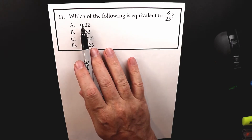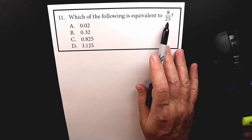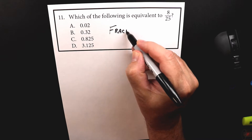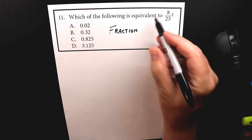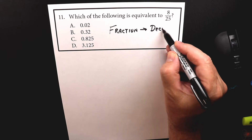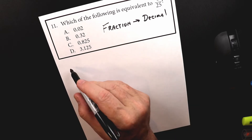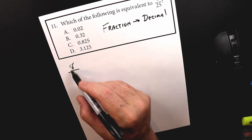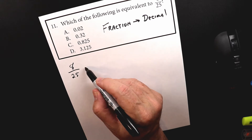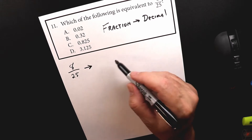This is number 11: which of the following is equivalent to 8 over 25? Here we're going to convert a fraction to a decimal. We have 8 over 25 — you've done this a couple of times for some of the previous problems — so we have to remember how to set up the division.